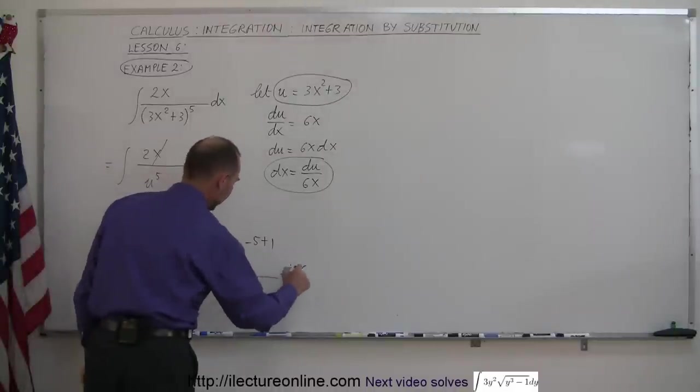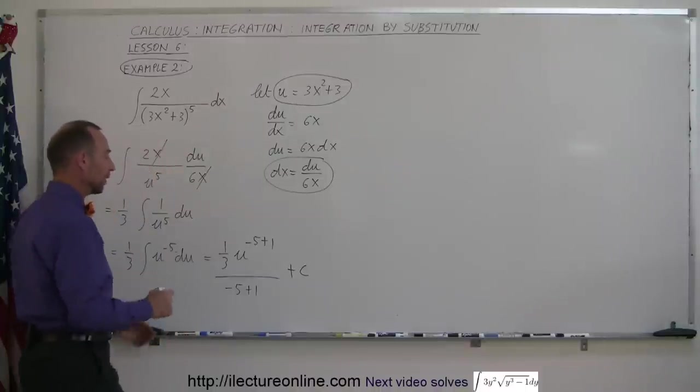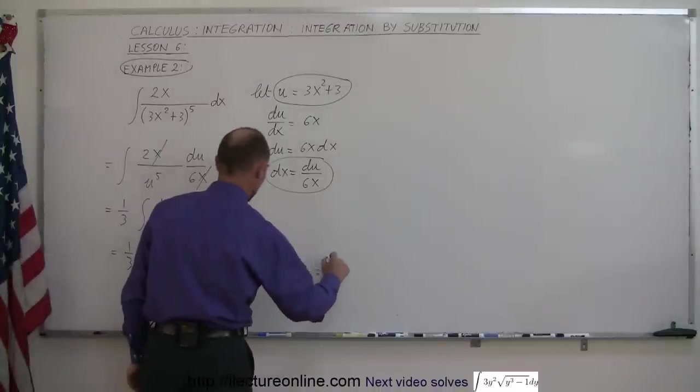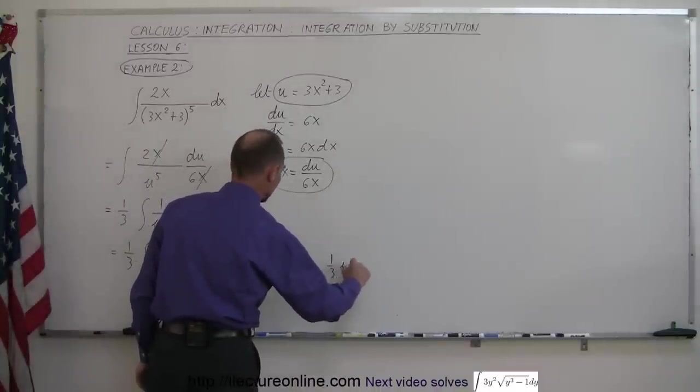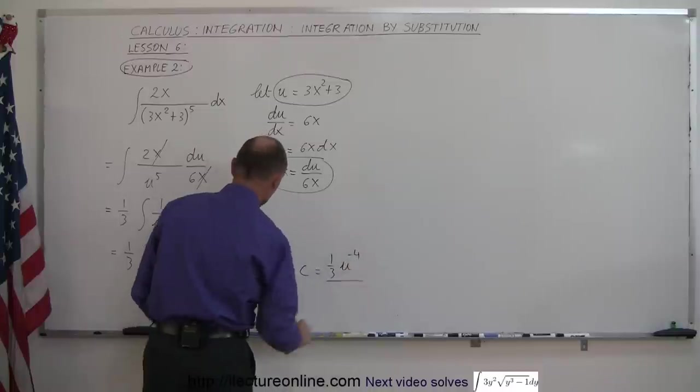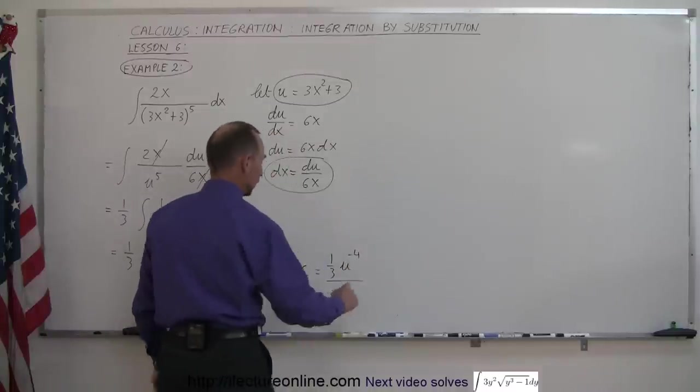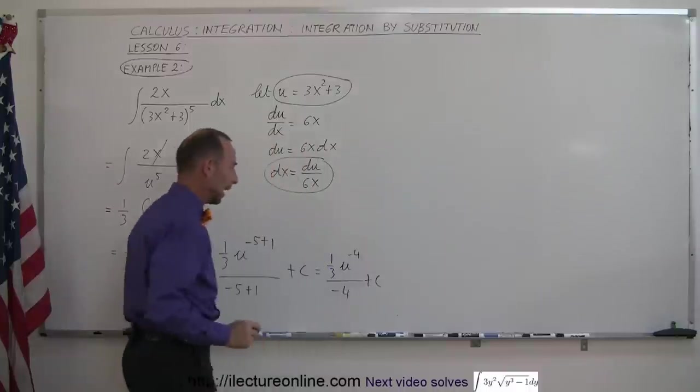And then if you simplify that, this is equal to 1/3 times u to the minus 4 divided by minus 4, plus the constant of integration.